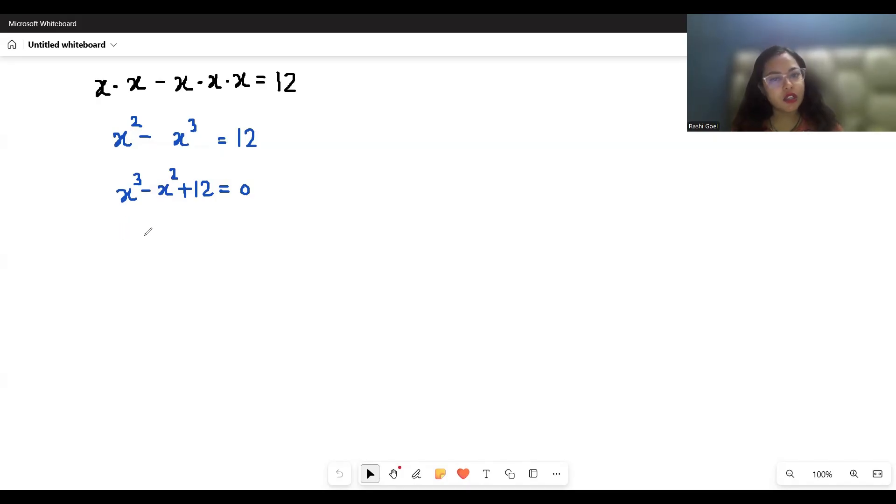We will check with positive and negative cases. When x equals 1, 1 cubed minus 1 plus 12 is not equal to 0. When x equals 2, 2 cubed is 8 minus 4 plus 12, it's not equal to 0.